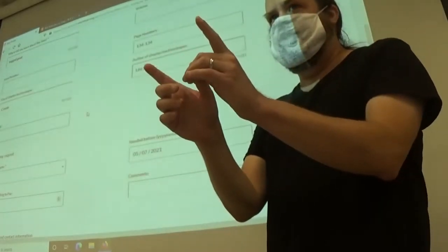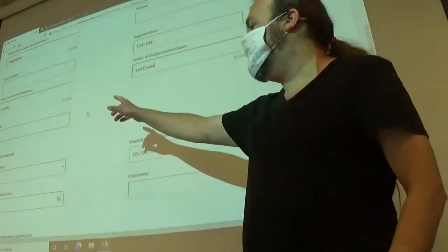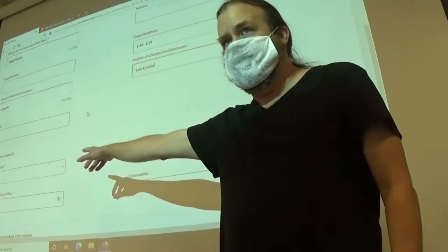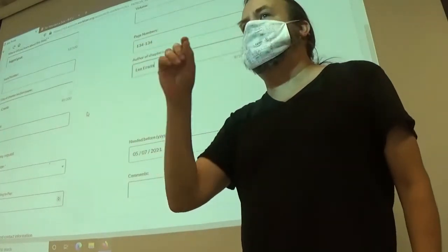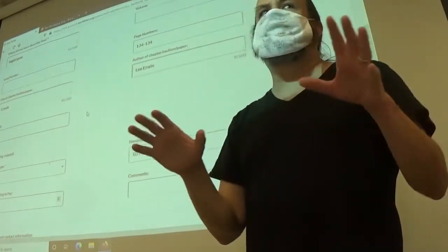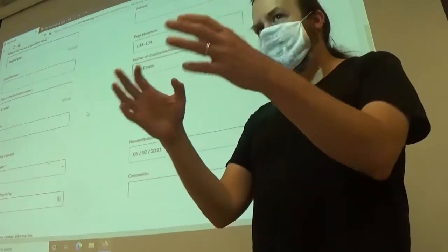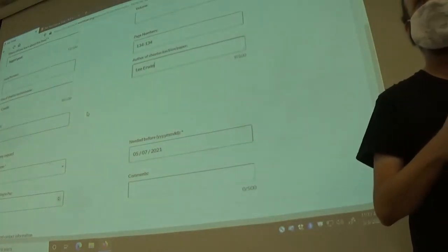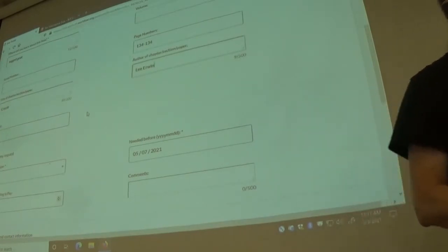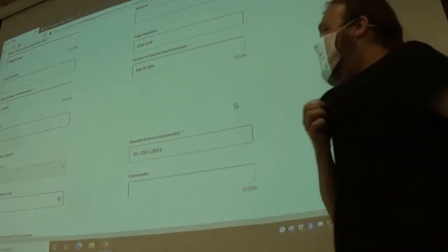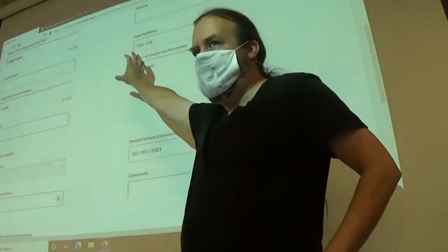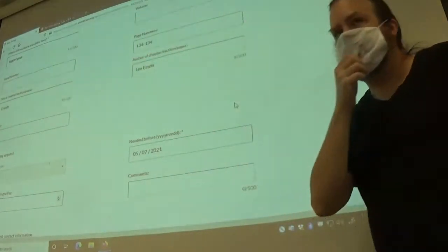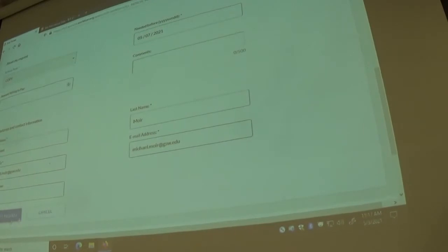Here's where the big difference comes in between requesting a journal article and requesting a book chapter. A book chapter is going to default to loan in this service type box, which means they'll send you the whole book unless you tell them not to. What you want to do is make sure that you click copy so that you just get the PDF of the chapter you need, and then submit request.